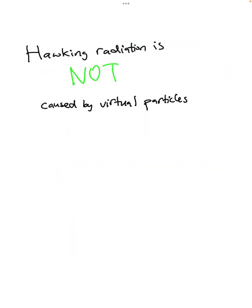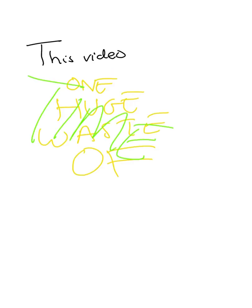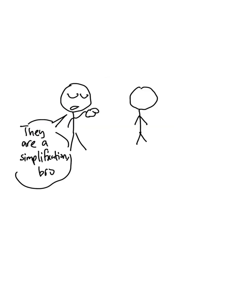So we now see that Hawking radiation isn't caused by virtual particles popping into existence. Instead, they are caused by the observers in flat space and curved space using different formulas for the number of particles. Now, you may believe that this video is just one large waste of time, because since virtual particles are just a simplification, we shouldn't be too fussed about the simplified explanation not being completely correct.